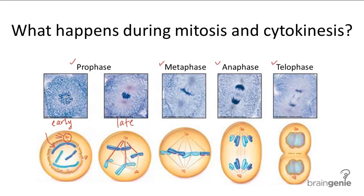In metaphase, the chromosomes line up in single file along the center of the cell. In anaphase, which is the shortest phase of mitosis, the genetic information is actually divided — you can see one sister chromatid from each chromosome is brought to opposite sides of the cell by the spindle fibers.